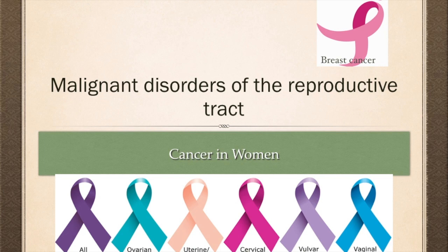Welcome to the lecture that will discuss the variety of malignancies that occur in the female reproductive tract, breast, and the pelvis. As you can see by the ribbons, not much of the female anatomy related to childbearing and childrearing is spared when it comes to cancer.